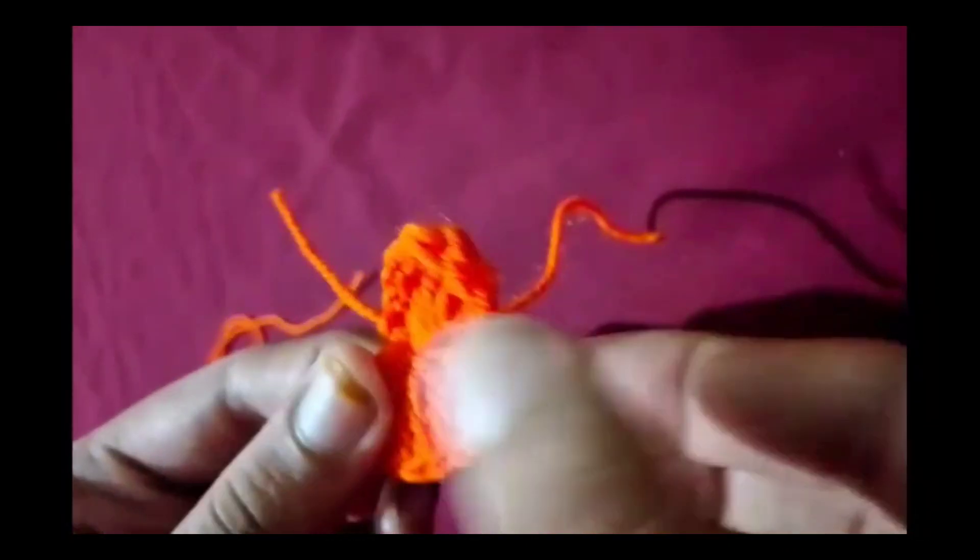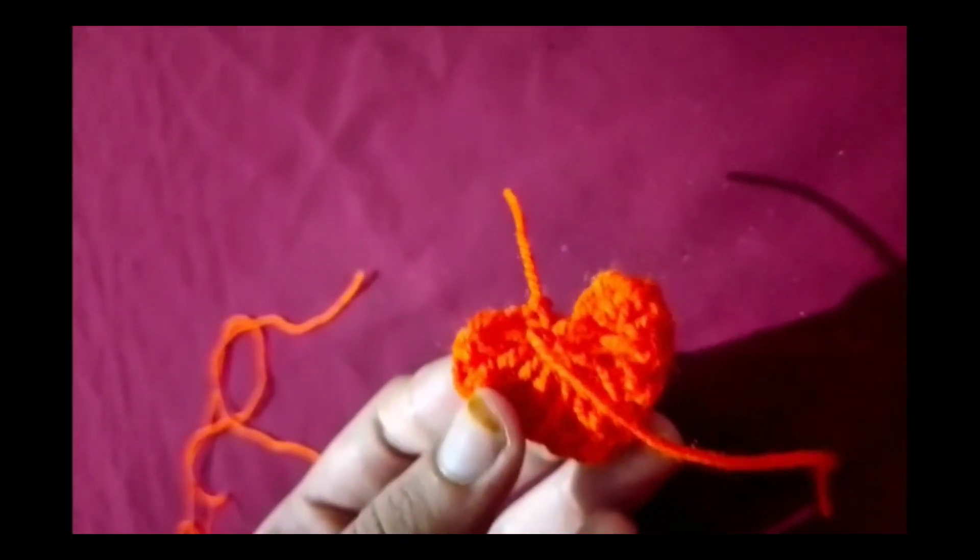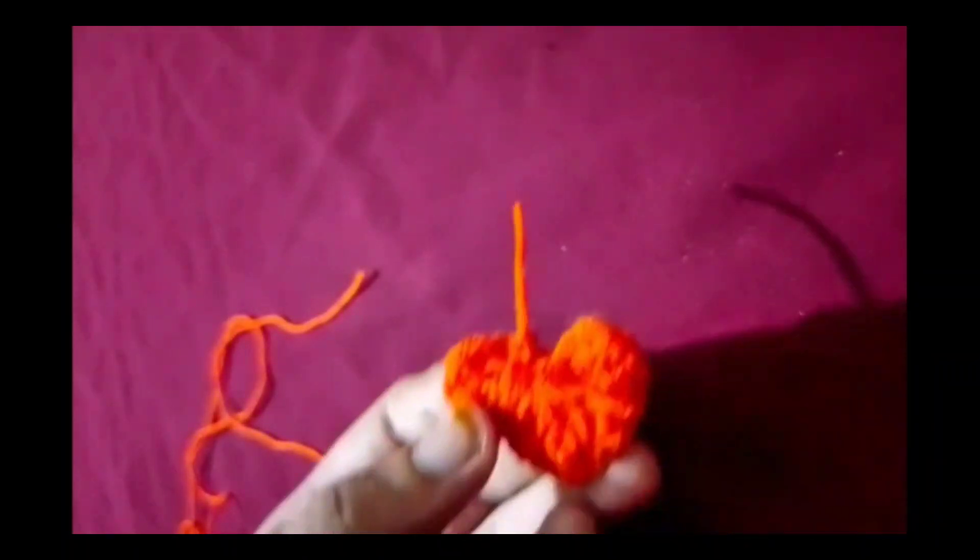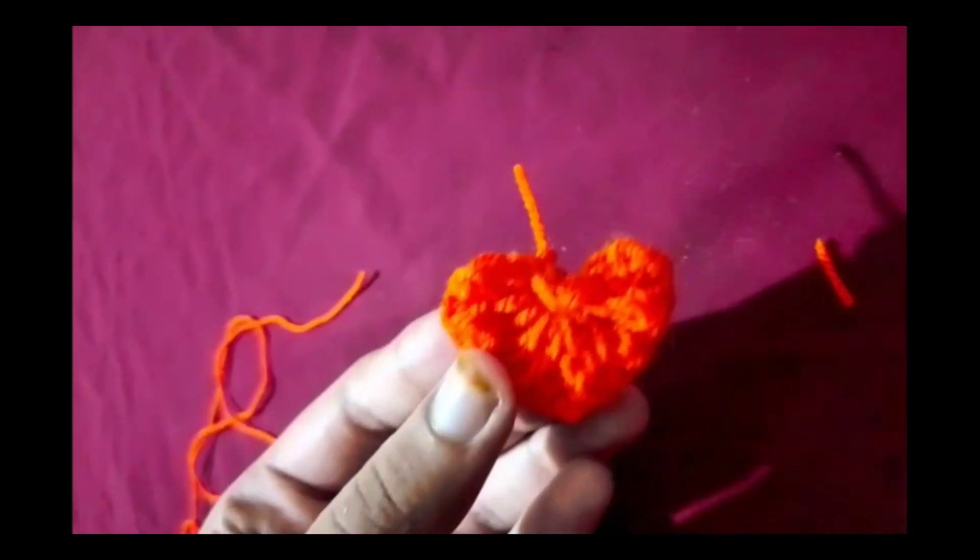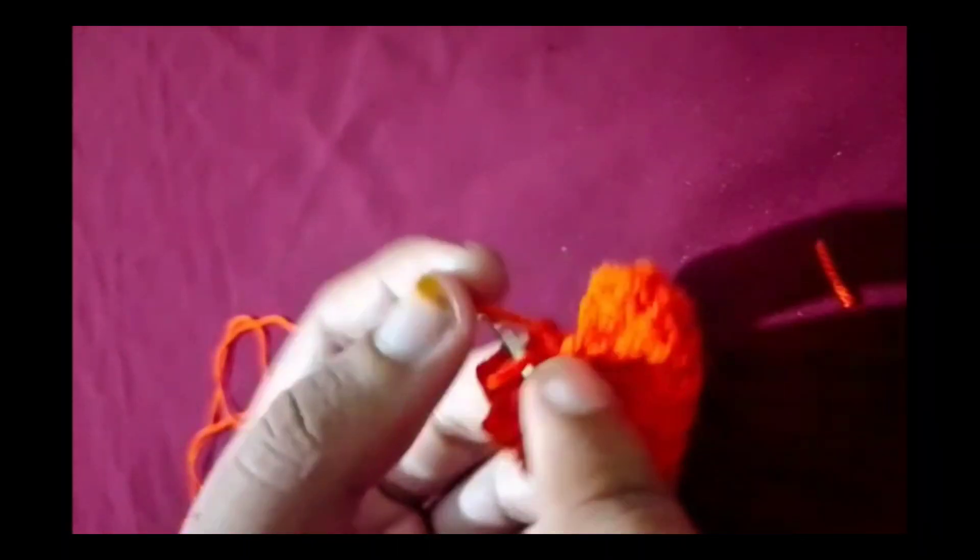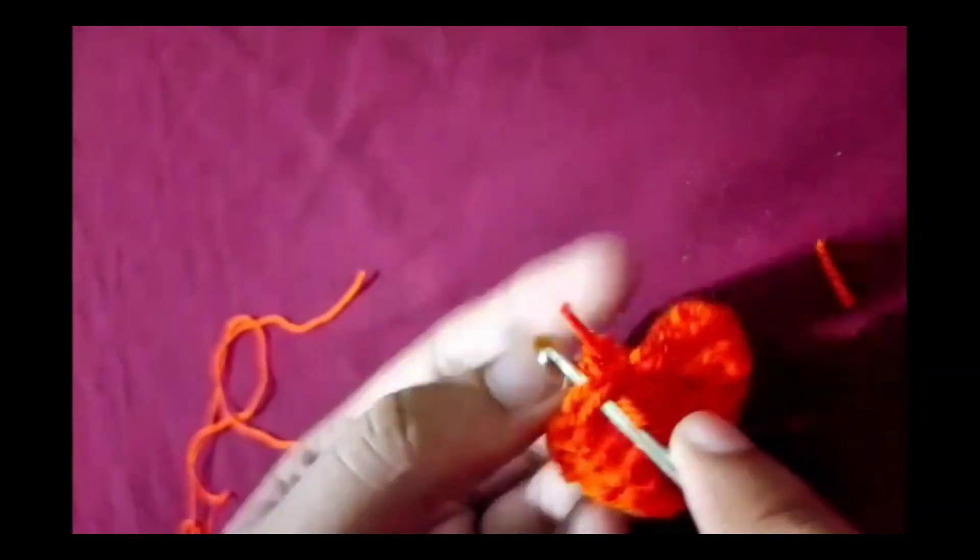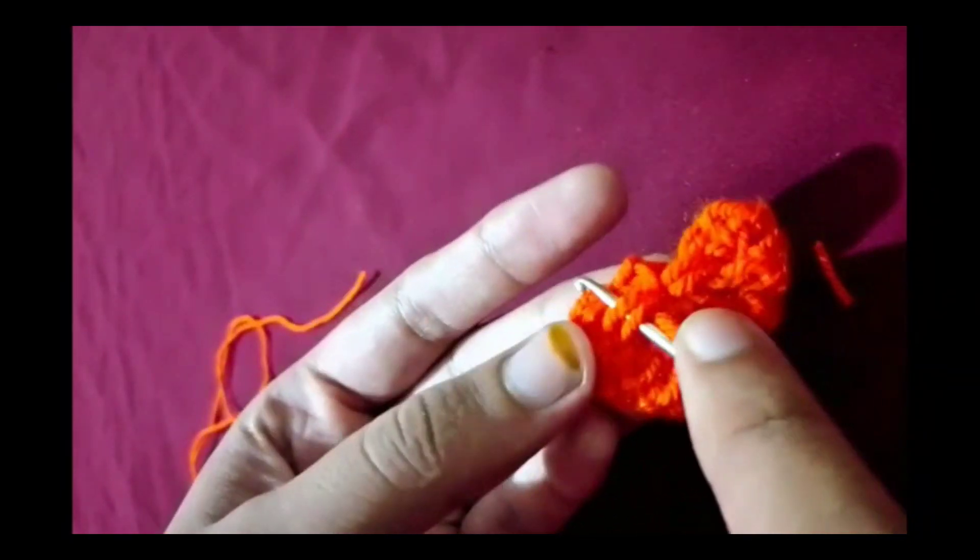Make sure the heart looks neat and clean. Now we're ready to add the pin. Grab your safety pin and needle. Turn the heart over so you're looking at the back. You can use a couple of stitches to hold it in place.